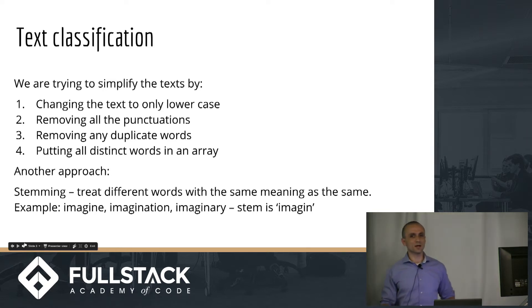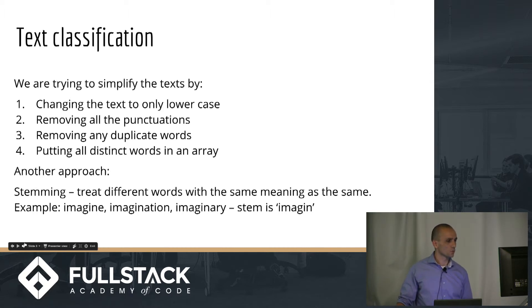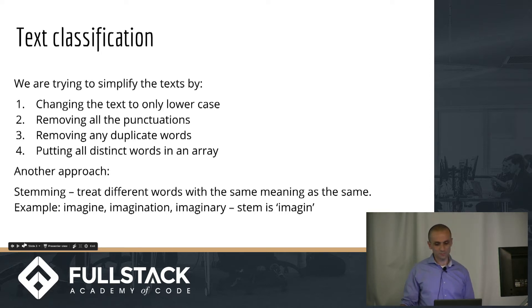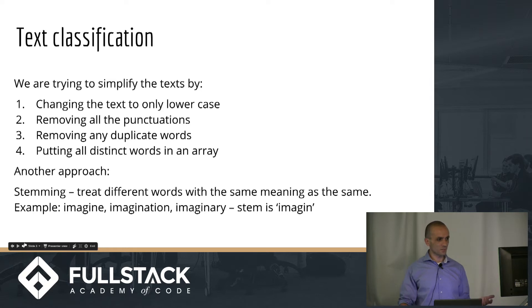We're not interested in how many times a word shows up — just whether it shows up at all. In my case, I want to classify text into three categories based on language: English, Spanish, or French. You can choose any languages; those are really popular ones. You can also have different types of classifications.